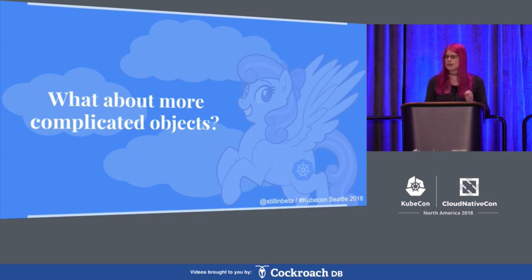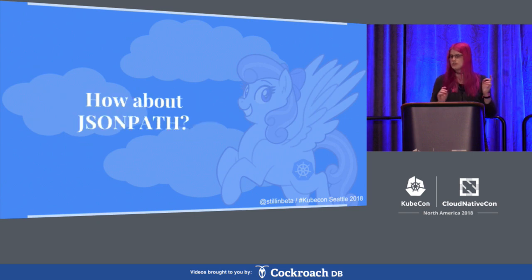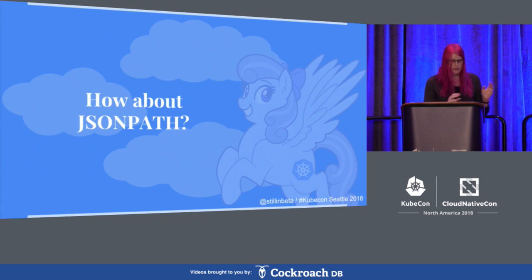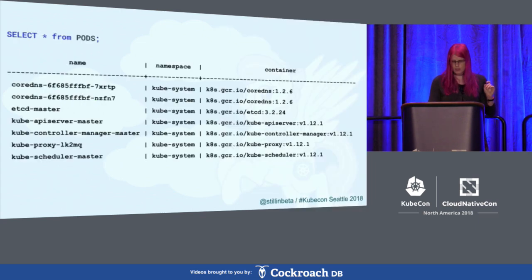But what about something more complicated? We've got containers in a pod, but there's more than one container per pod. What if we just want to pull the first one out? Each pod can have multiple containers, so we can use JSON path. If you don't know JSON path, it's probably one of the most useful parts of kubectl — the command, not the pony. It provides a useful, possibly familiar syntax for us. Let's add that to our table. We use the same alias option we used before, but this time we wrap it in curly braces to signal it's JSON path — and it works.